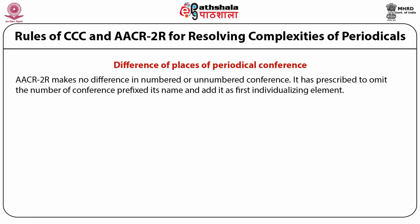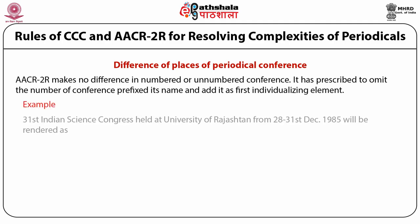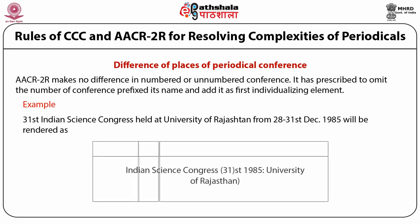AACR2R makes no difference between numbered or unnumbered conferences. It prescribes to omit the number of the conference, prefix its name, and add it as the first individualizing element. Example: the 31st Indian Science Congress held at University of Rajasthan from 28th to 31st December 1985 will be rendered in the catalog entry as: Indian Science Congress (31st: 1985: University of Rajasthan).